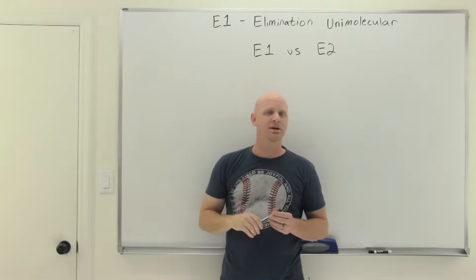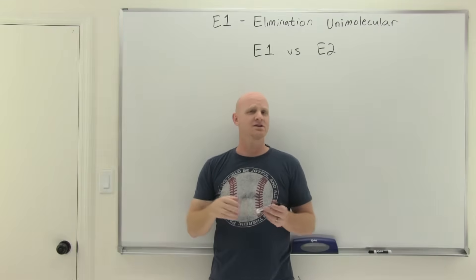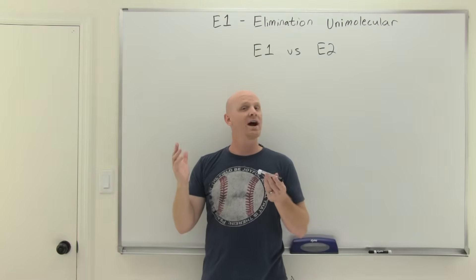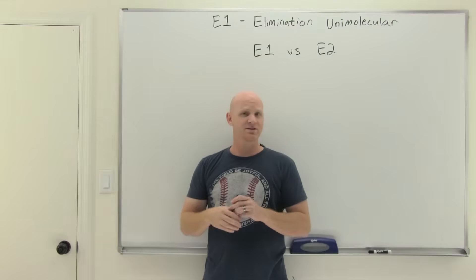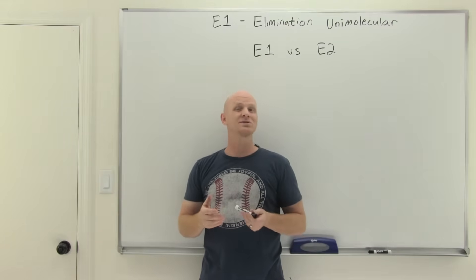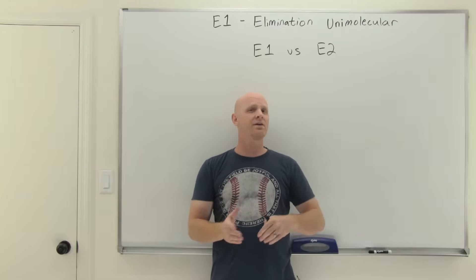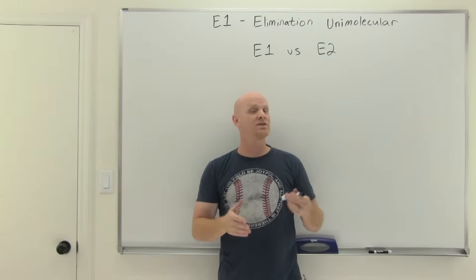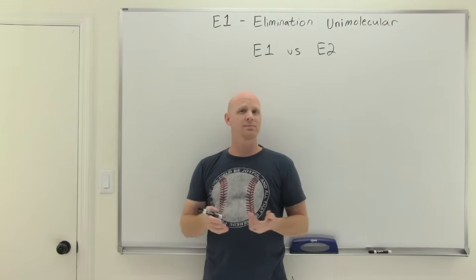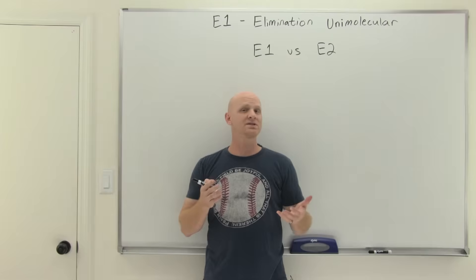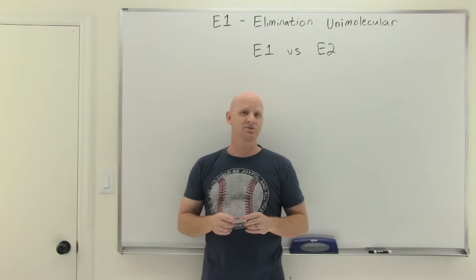E1 reactions will be the initial topic of this lesson. We'll go through the mechanism and the rate law, we'll see how it involves carbocation formation in the slow step, and we'll look at some key characteristics and see how it always results in the Zaitsev product. We'll then move on to comparing and contrasting that with E2 reactions and look at how we predict the products of an elimination reaction by first distinguishing which mechanism the reaction is actually proceeding through.